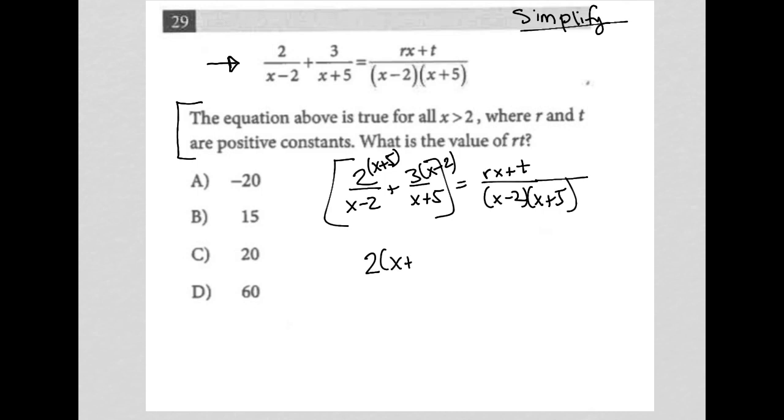I'd have 2 times (x plus 5) plus 3 times (x minus 2) all over (x minus 2) times (x plus 5), which is getting me something that looks much closer to the right side here. And I can continue to simplify even further.